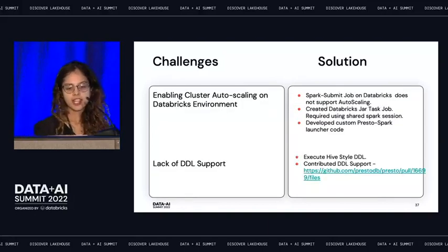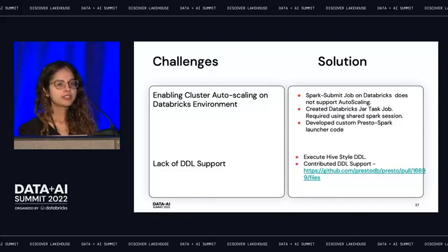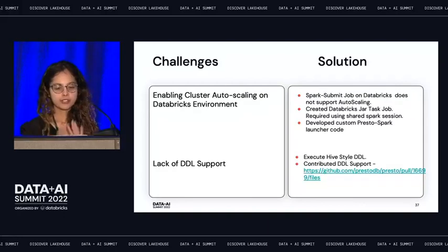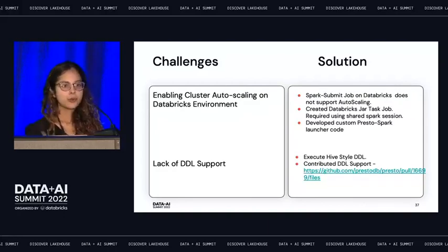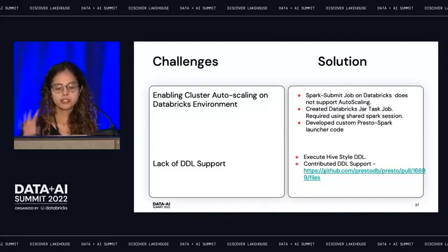The third challenge was cluster autoscaling. This was very important because analysts should not need to define the number of nodes or configure autoscaling — we handle it, and it's opaque to users. If you're using Databricks, don't use spark-submit because your jobs won't scale; use a jar task instead, which requires access to a shared Spark session.